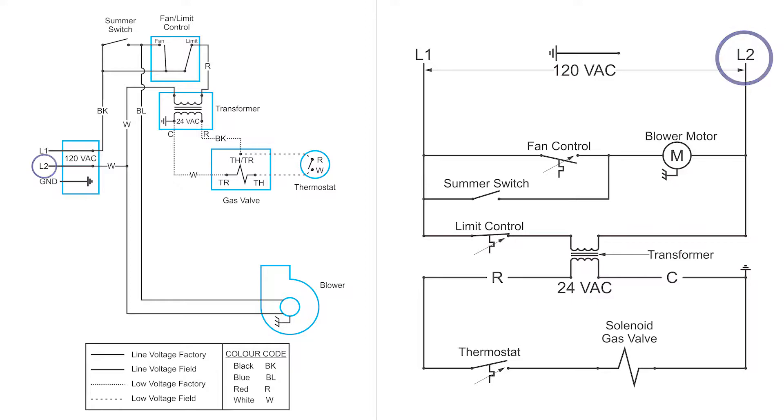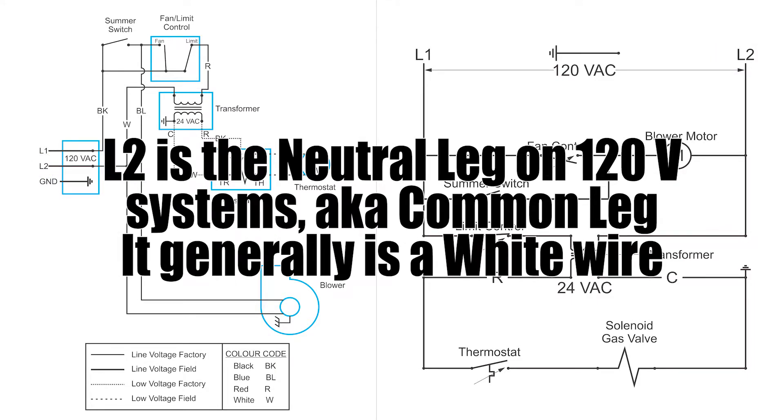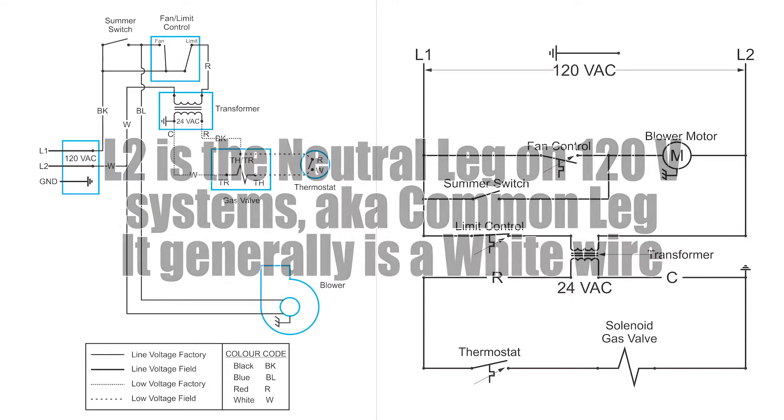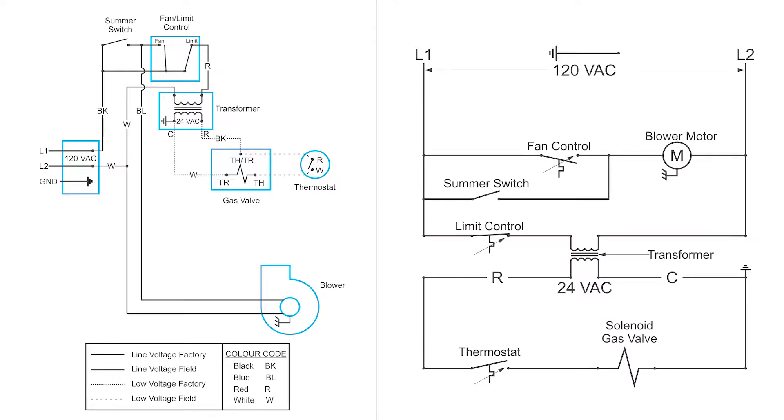L2 is referred to as common or neutral. More accurately it is called the identified conductor. But that is white in color. And generally speaking if you touch that one you won't get a shock. But not always.